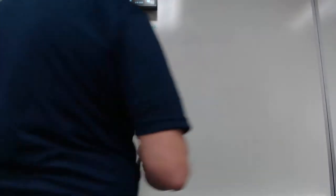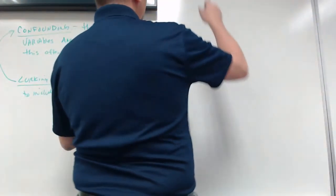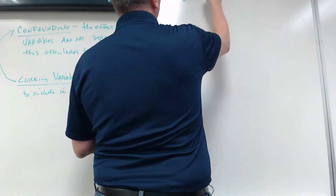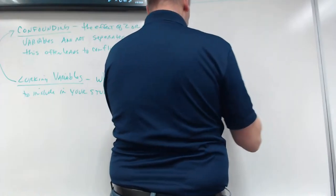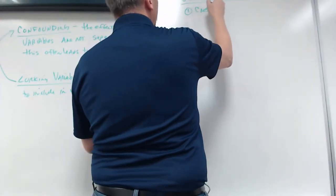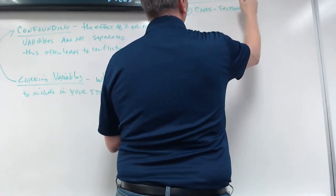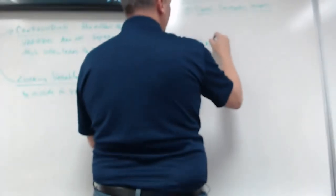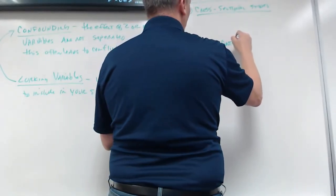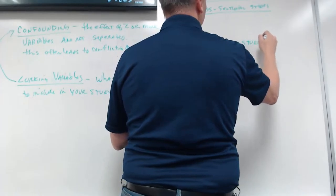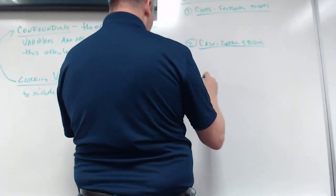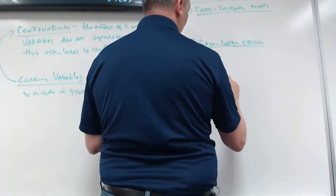Now let's talk about different types of observational studies. Number one: cross-sectional studies. Number two: case-control studies. Number three: cohort studies.